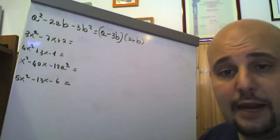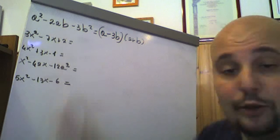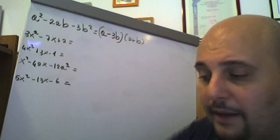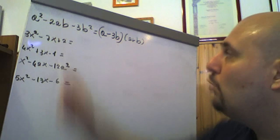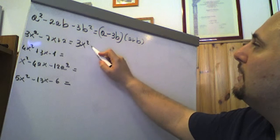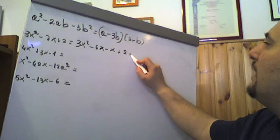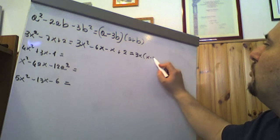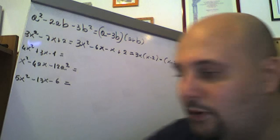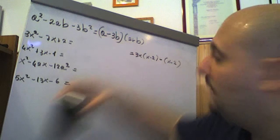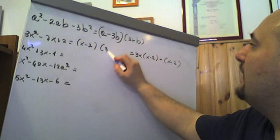3x² − 7x + 2 non è un trinomio notevole ma è un trinomio di secondo grado scomponibile via raccoglimento parziale. Moltiplichiamo 2 per 3 = 6; −6 + (−1) = −7. Scriviamo 3x² − 6x − x + 2, raccogliamo 3x dai primi due: 3x(x − 2), poi −1(x − 2). Raccogliendo (x − 2): (x − 2)(3x − 1).